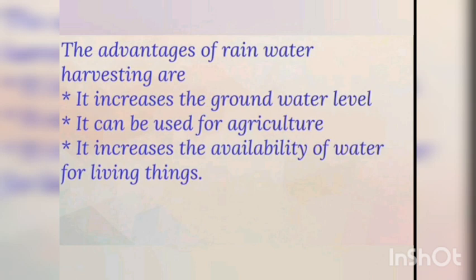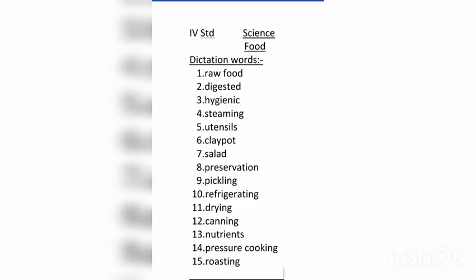Now I will give the food lesson dictation words. First one: raw food, digested, hygienic, steaming, utensils, clay pots, salad, preservation, pickling, refrigerating, drying, canning, nutrients, pressure cooking, roasting. Now water dictation words: states, solid, liquid, gas, melting, heating, cooling, freezing, ice, water vapor, mist, temperature, evaporation, condensation, and precipitation.